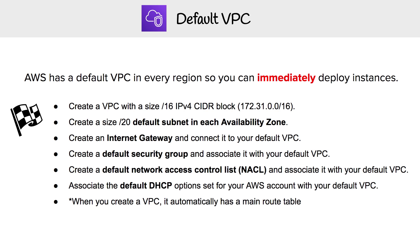We were saying earlier that you get a default VPC for every single region. The idea behind that is so that you can immediately launch EC2 instances without having to really think about all the networking stuff you have to set up. But for the certification, we do need to know what is going on. It's not just a default VPC — it comes with other things and specific configurations that we definitely need to know for the exams.